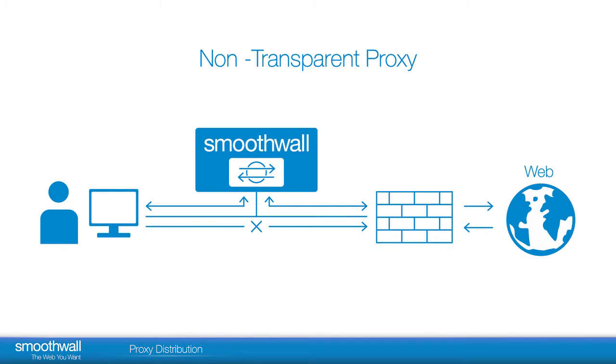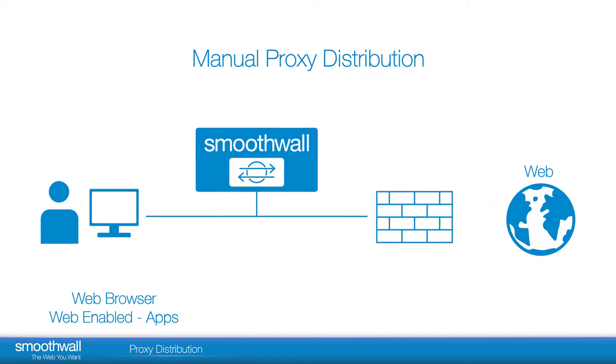Proxy distribution is required for non-transparent filtering. This can take many forms.